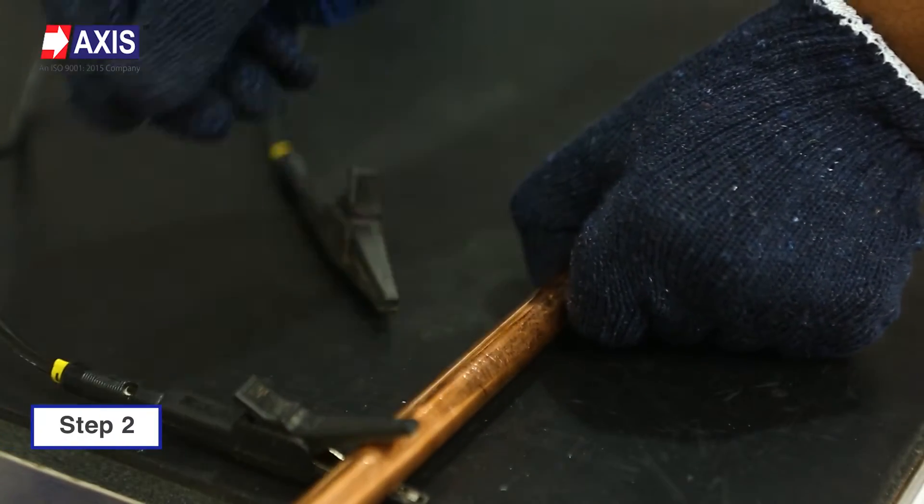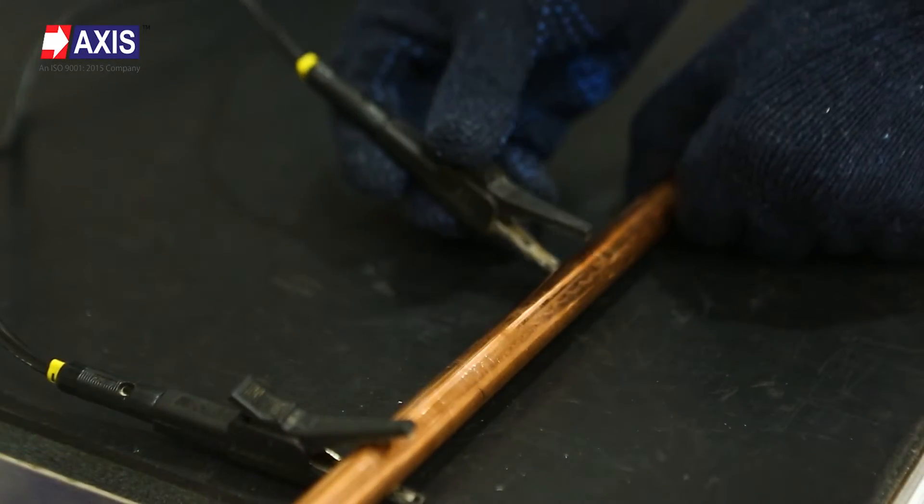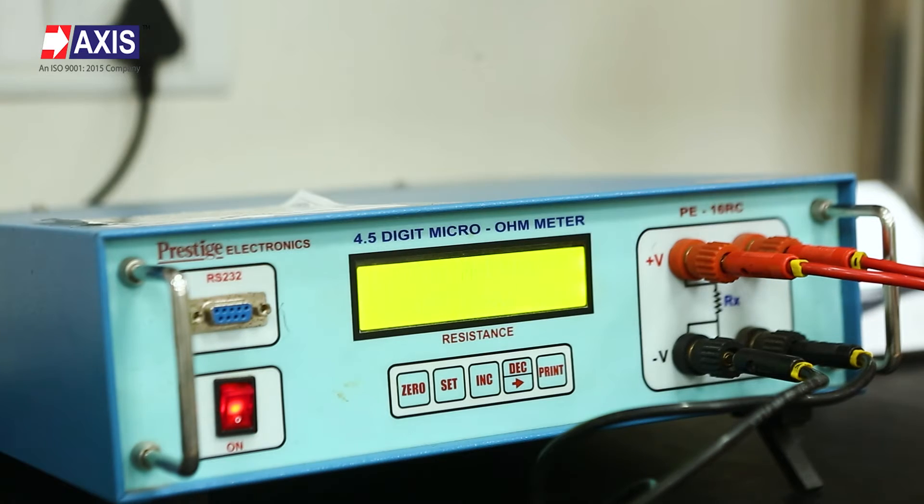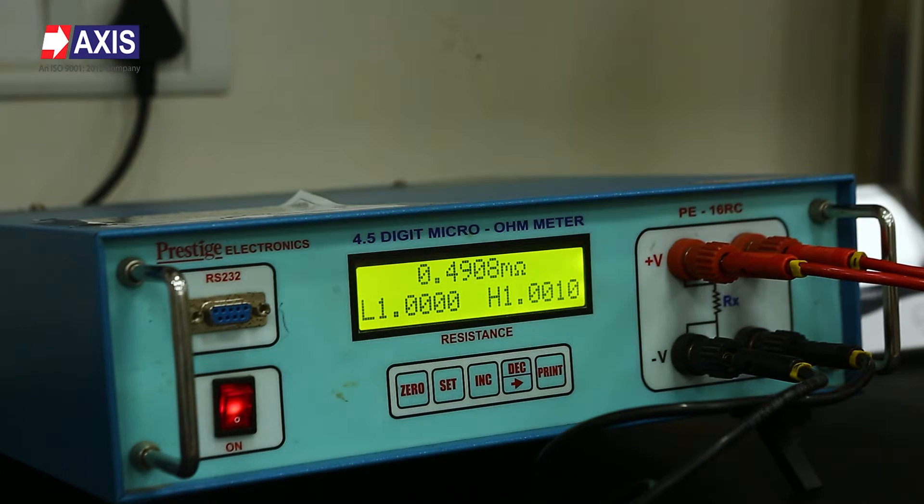Number two, connect the voltage and current probe to the test sample where you made the mark. Number three, if the approximate value of resistance is known, then select the resistance range accordingly. This is generally between 2 milliohm to 20 kilo ohm.